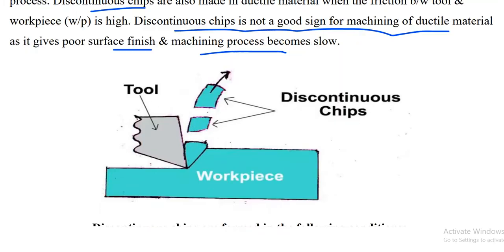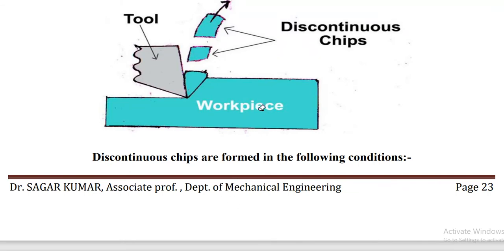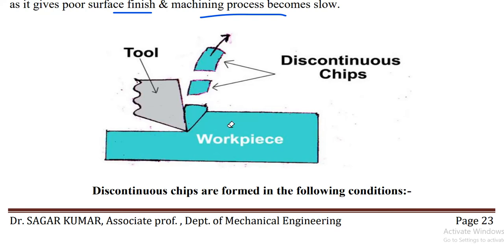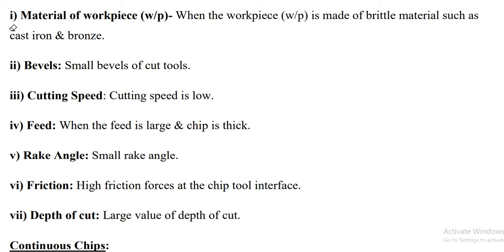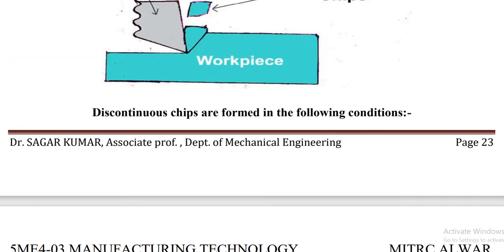In the figure of discontinuous chip formation, the workpiece is shown with the tool moving on it, forming chips in a discontinuous manner — the chip breaks step by step. Conditions for discontinuous chip formation include: brittle workpiece material such as cast iron and bronze, slow cutting speed, large feed (thick chip), small rake angle, high friction at the chip-tool interface, and large depth of cut.